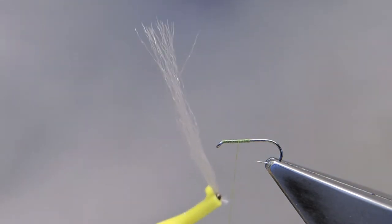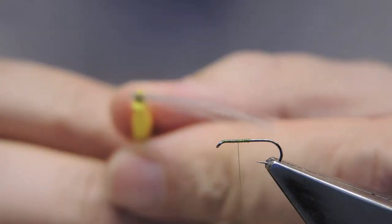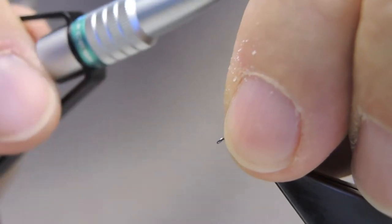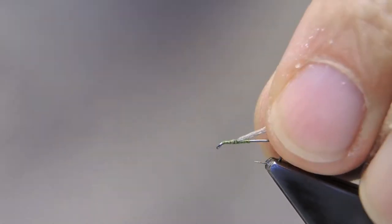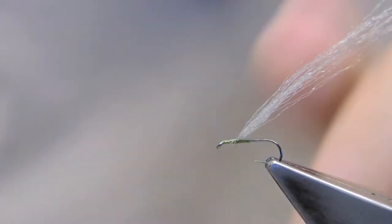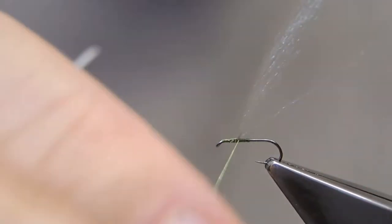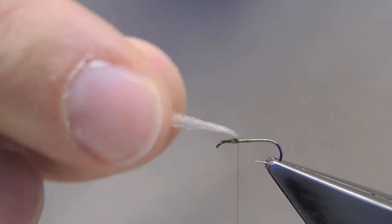The wing is some fine grey polypropylene yarn, tied in on top, lashed down securely, and the thread is placed behind this post.